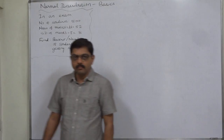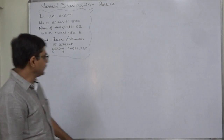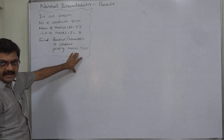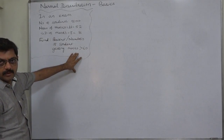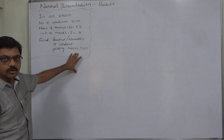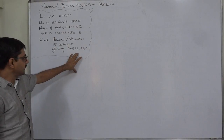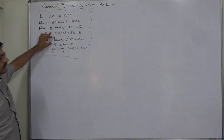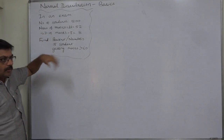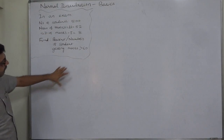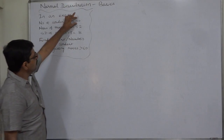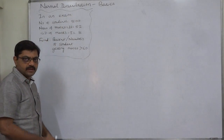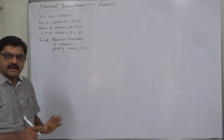We have to calculate the probability of X greater than 60. If we multiply that probability by 100, the result will be the percent of students. If we multiply the probability by the total number of students, 500, the result will be the number of students getting marks more than 60.